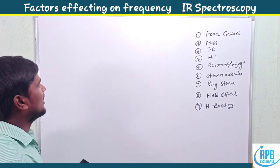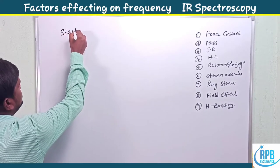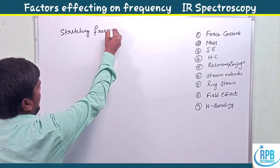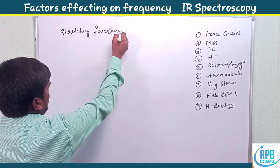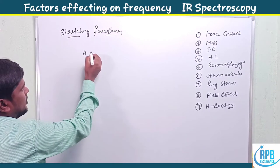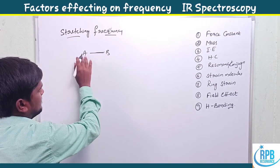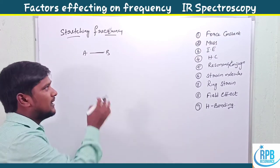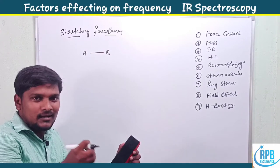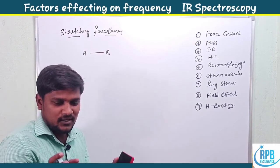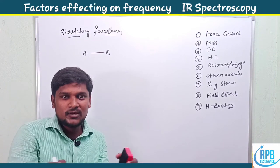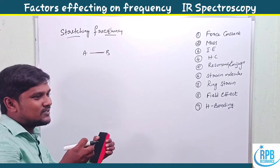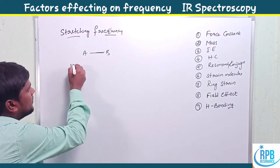First of all, how do you calculate the stretching frequency of atoms? Generally, a molecule is imagined like two balls A and B connected through a spring. These two balls connected through a spring represent a molecule, and for this spring-ball system, Hooke's law is applicable.